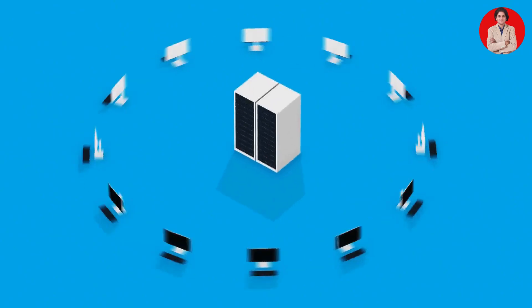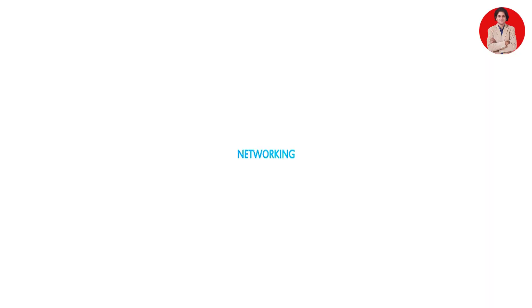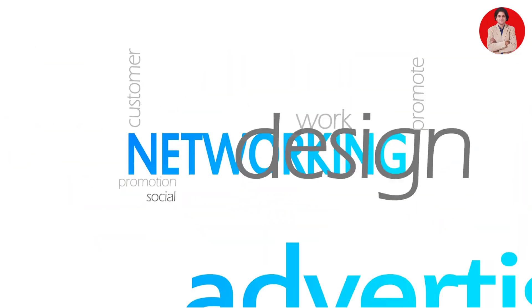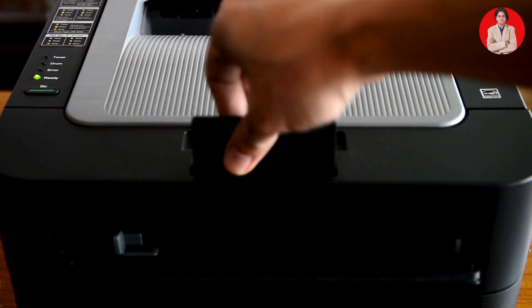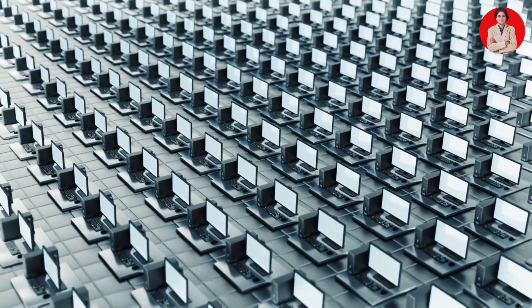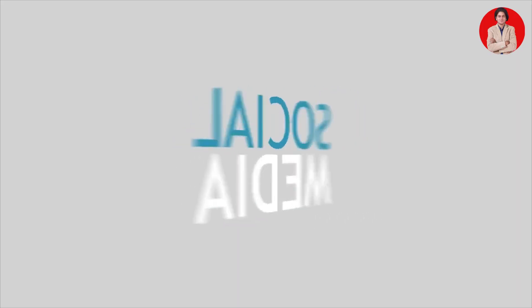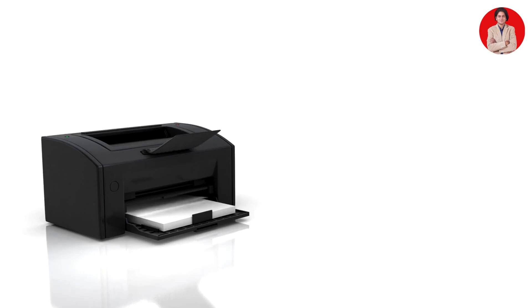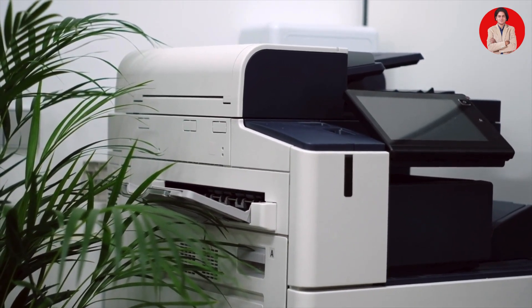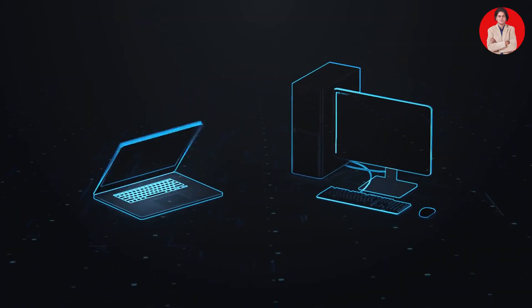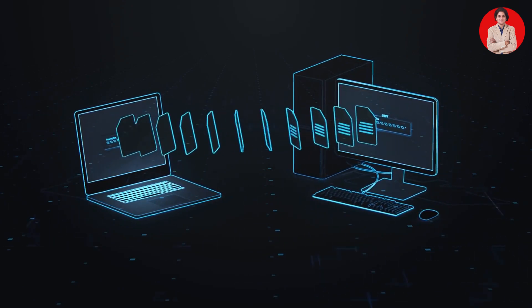Resource sharing: Networking allows devices to share resources, which can significantly reduce costs and increase efficiency. Instead of every computer needing its own printer, for example, multiple computers can share a single printer over the network. Other resources that can be shared include printers. As mentioned, sharing printers saves money and space, and files. Centralized file storage allows users to access and share files easily.